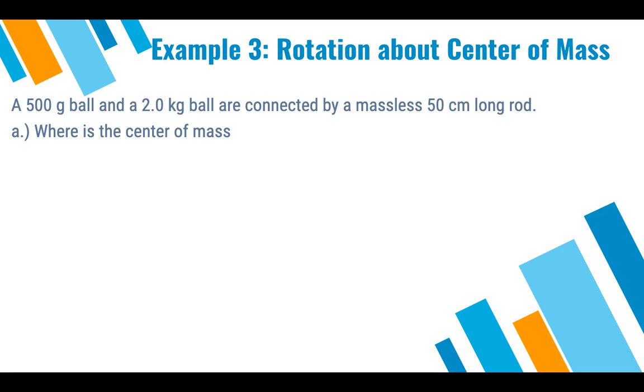Example three: Rotation about the center of mass. A 500 gram ball and a 2.0 kg ball are connected by a massless, 50 cm long rod. So if an object is massless, we do not include it in our calculation for the center of mass. If they tell you to ignore the mass, or the surface area of a specific object, when they say to ignore the mass, that means that you do not include it in the center of mass calculation. If you're instead told the surface area is unimportant, you only find the x position of the center of mass, not the y, because the y is to be ignored.